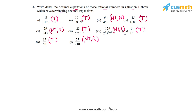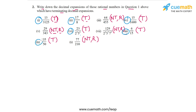I had written T to represent terminating and NT,R to represent non-terminating repeating. Of these 10 numbers, the numbers which have terminating representations or terminating decimal expansions are: 13 by 3125, 17 by 8, 15 by 1600, 23 by 2 cube into 5 square, then 6 by 15, and then 35 by 50.